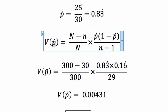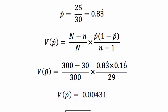We usually do P hat Q hat on N minus 1. This time, because it's finite sampling, we're sampling from a finite population. We've got to include this factor, that capital N minus little n over capital N. Calculating that, we get a variance of P hat of 0.00431.